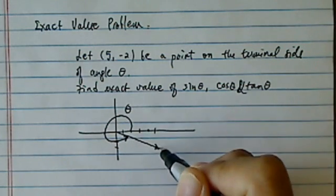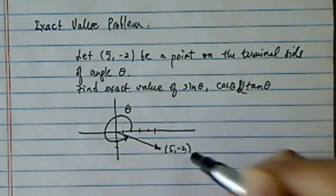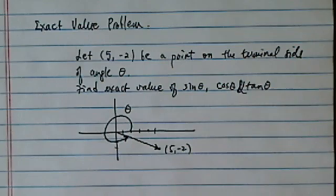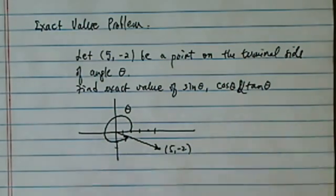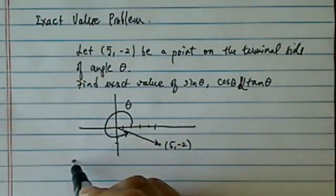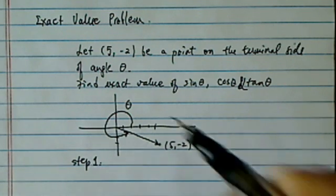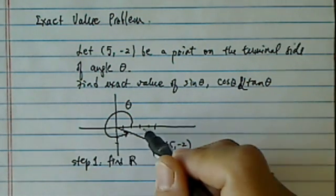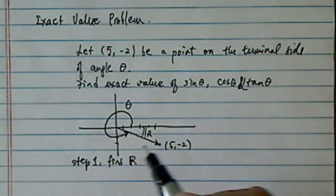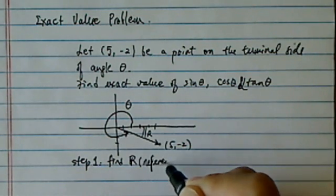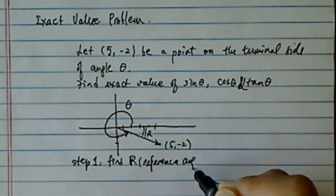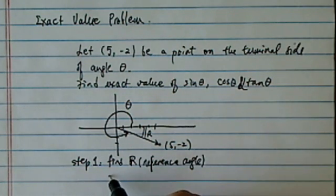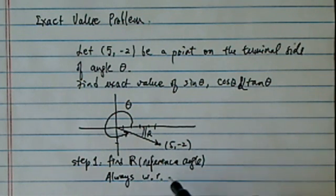So here we're given the point (5, -2) on the terminal side of this angle theta. What I'm going to present here is actually a two-step process. Step 1, you're going to draw it, and then you're going to find what we call the reference angle r. Reference angle is always with respect to x-axis.